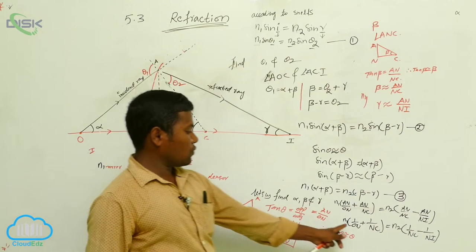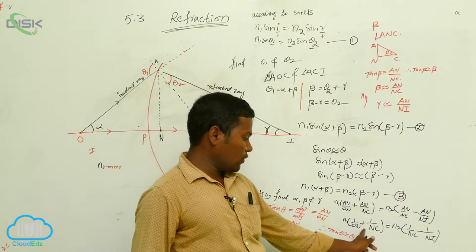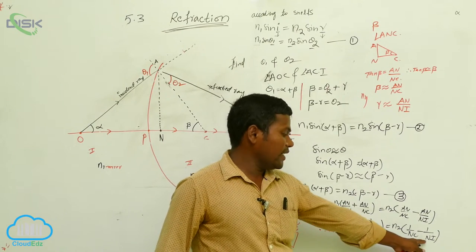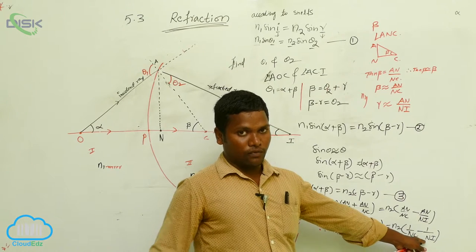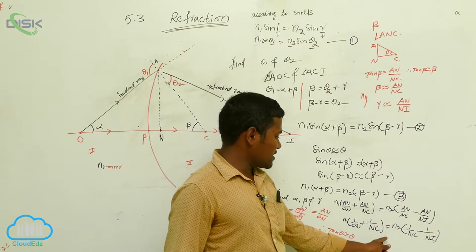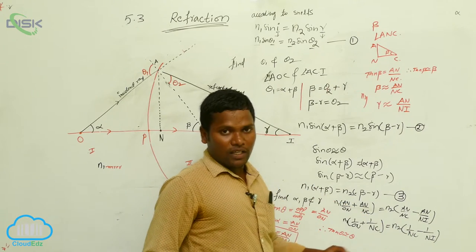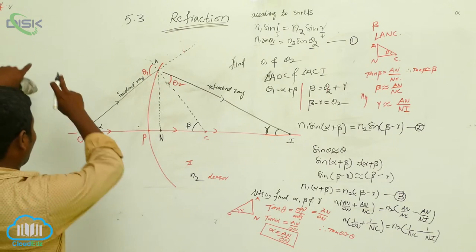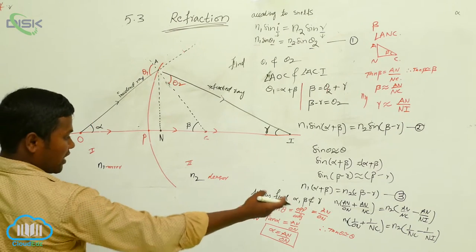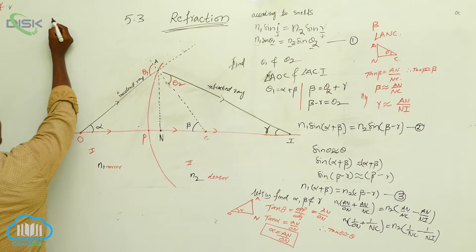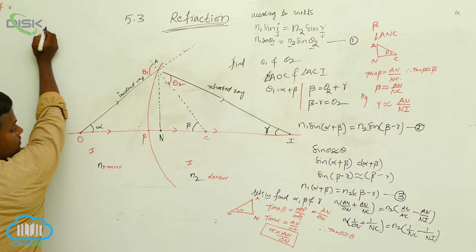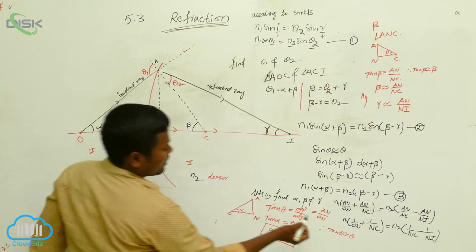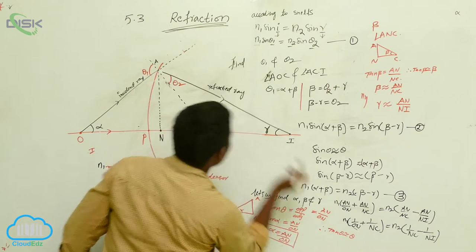If I am able to find the values ON, NC, and NI and substitute them in this equation, I will get the answer. Now I am going to rewrite that equation because some are unable to see it. What values do I need? ON, NC, and NI. If you are able to find these three, then the question is solved.